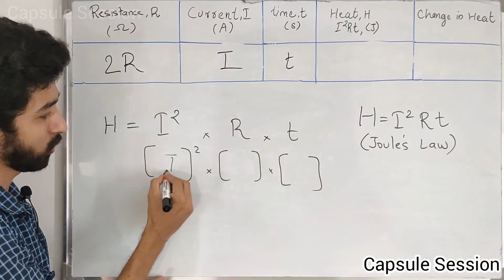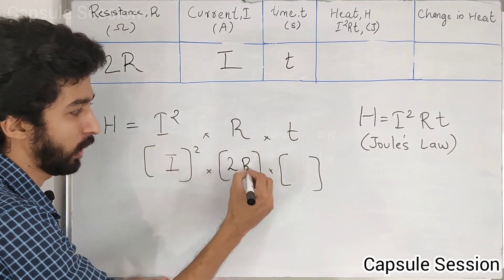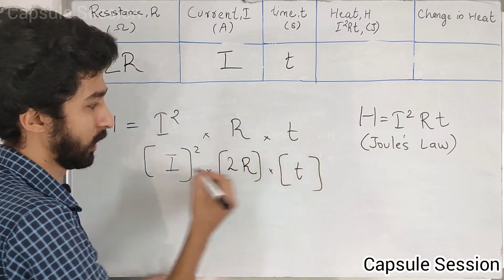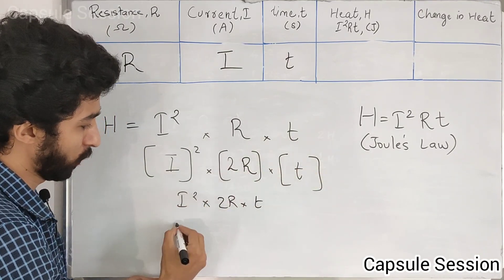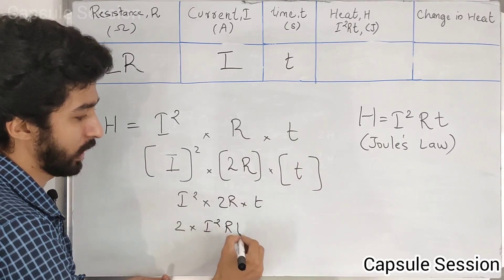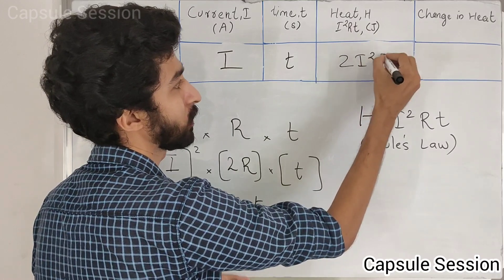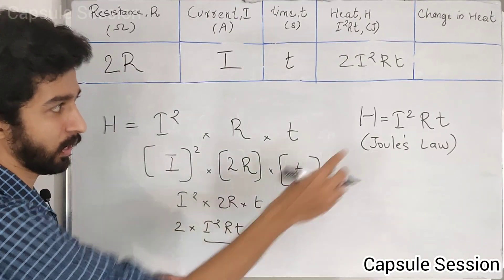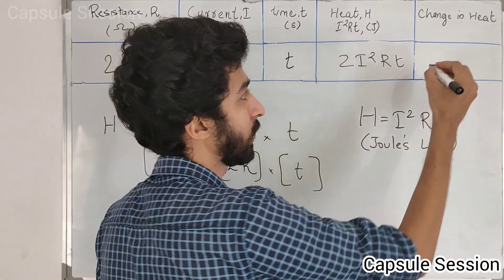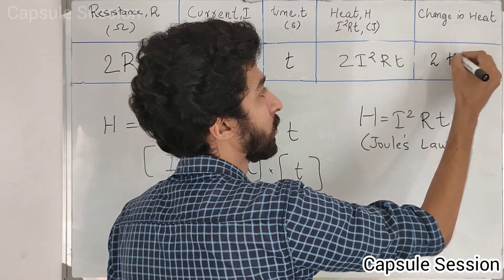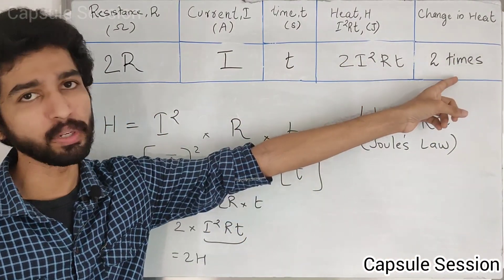The resistance is 2R, and the time is T. If we find them, we are going to calculate the heat. Here we go to 2R, and here we go to the heat — so here, 2RT. The final answer is 2H. So what is the change in heat? I call it 2 times heat, because 2 into I²R is 2 times heat.